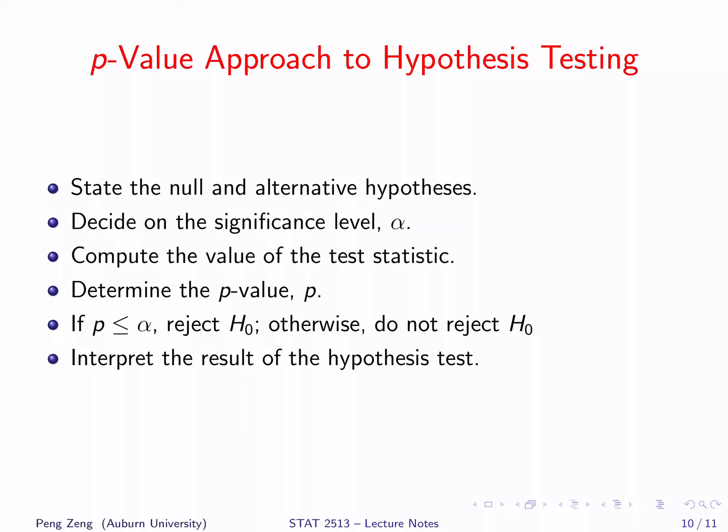If we want to apply the p-value approach to hypothesis testing, follow these steps. First, correctly state the null and alternative hypothesis. Then, decide on the significance level alpha — in most disciplines it is 0.05. Next, compute the value of the test statistic. Then calculate the p-value. If the p-value is less than or equal to alpha, reject the null hypothesis; otherwise, do not reject it. Finally, interpret the result of the hypothesis test. For different hypothesis testing problems, we may use a different test statistic or calculate p-values in different ways, but these general steps always apply.